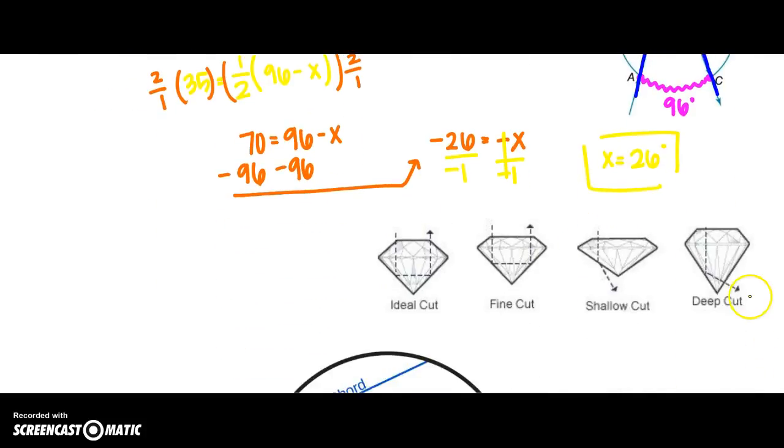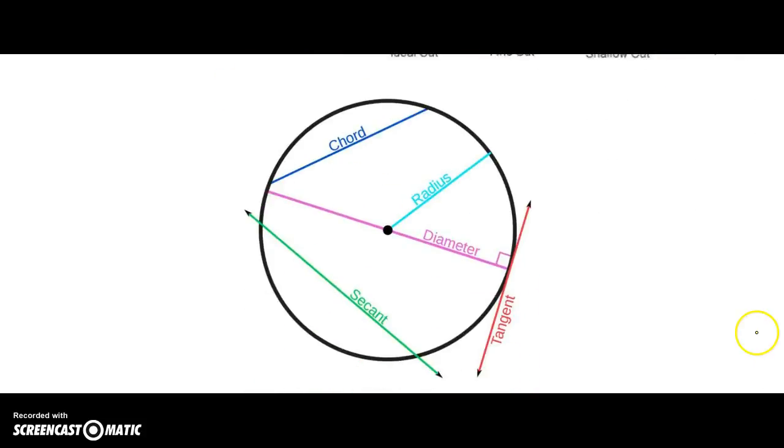Right at the bottom of your page, I have just put in some real life diamond examples of being refracted. And then here's just a reminder. Chords hitting the circle at its two end points that are on the circle. Our radius has an end point at the center and at the circle. My diameter goes all the way across but through the center.